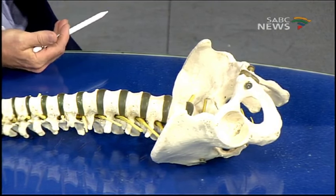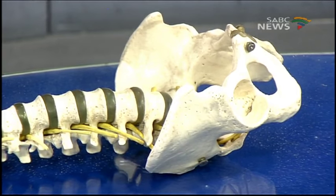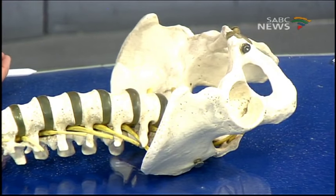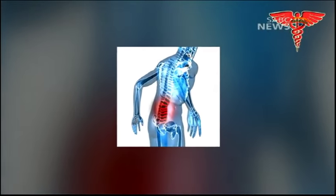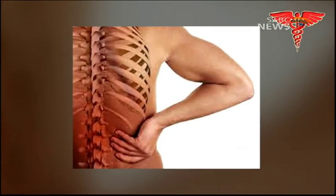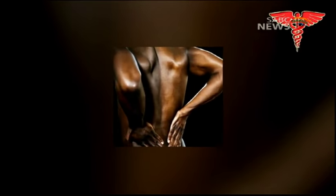If pain starts going down the leg — radiculopathy or sciatica — it needs to be looked at more carefully, because it means there's nerve root compression or irritation that needs to be addressed. Most common back pain is relatively acute, due to strain or small injuries from everyday lifestyle, and can be treated very conservatively.